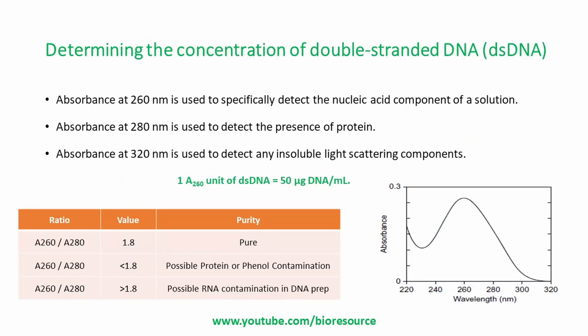So, how do we determine the concentration of double-stranded DNA? This is very useful when working with plasmids, genomes, etc. The quantification is typically performed by taking absorbance measurements at 260 nanometers, 280 nanometers, and 320 nanometers. Absorbance at 260 nm detects the nucleic acid component; absorbance at 280 nm detects protein, because tryptophan residues absorb at this wavelength; and absorbance at 320 nm detects insoluble light-scattering components. A spectrophotometer scanning from 200 to 320 nanometers can yield maximum relevant information about purity and contaminants in the DNA.